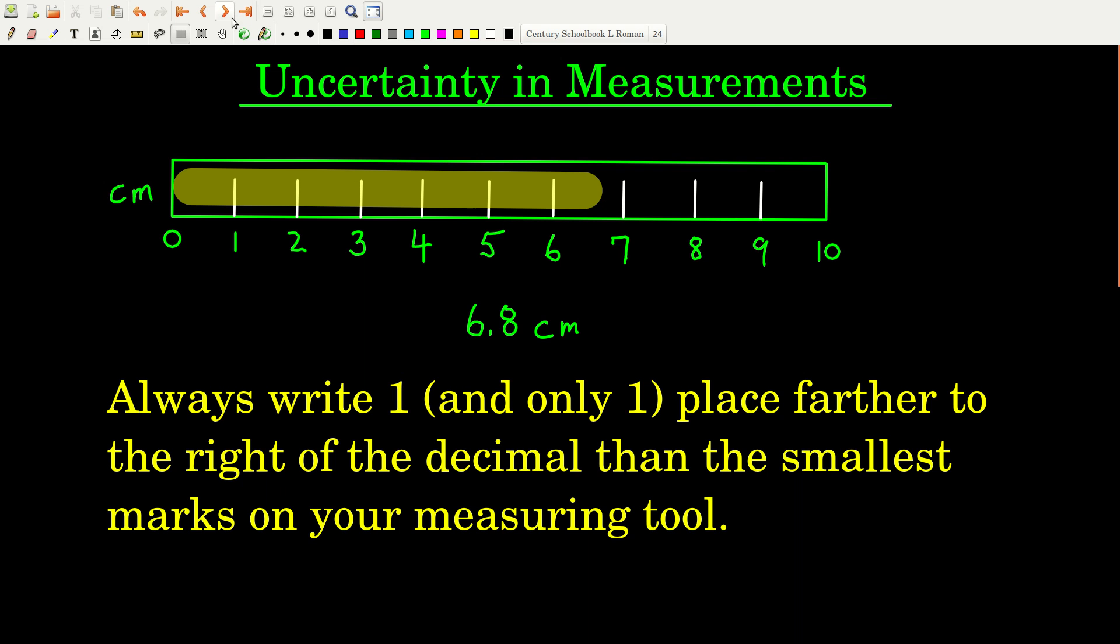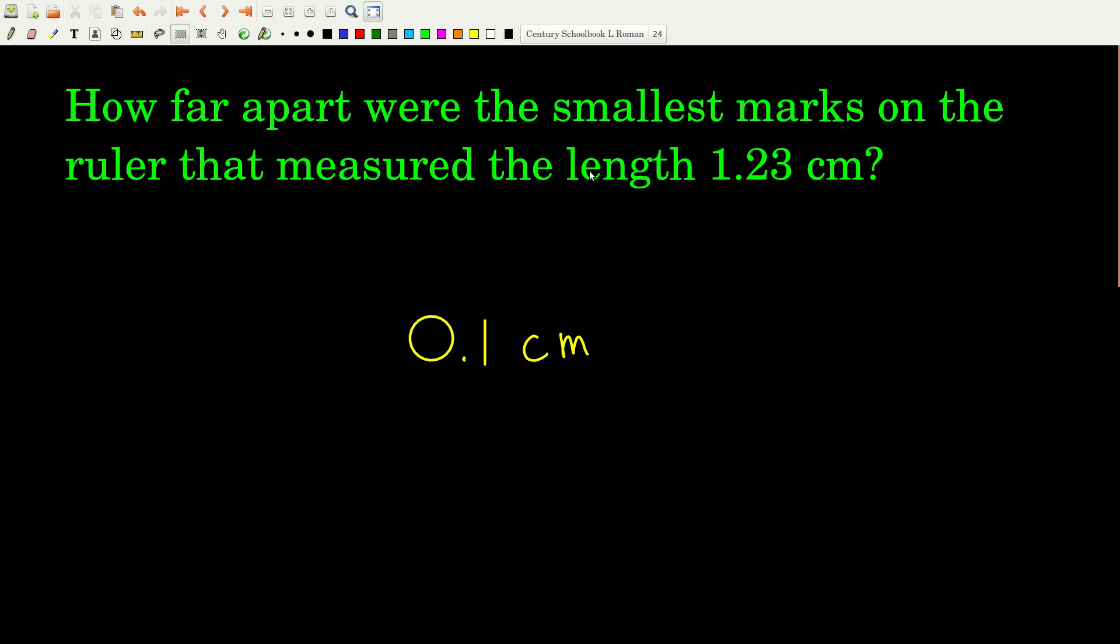All right. So for example, let's say somebody measured the length of something that was 1.23 centimeters. That's the measurement that they took right here. So what we want to know is how far apart the closest marks were on that ruler. Well, it's always one to the left, right? So our last significant figure here is the three. That three is two to the right of the decimal. So we know that the ruler had marks, the closest marks to each other were in the tenths place, a tenth of a centimeter apart. So each of the marks were a tenth of a centimeter apart on whatever ruler was used to take this measurement.